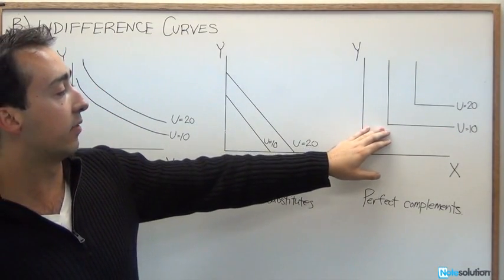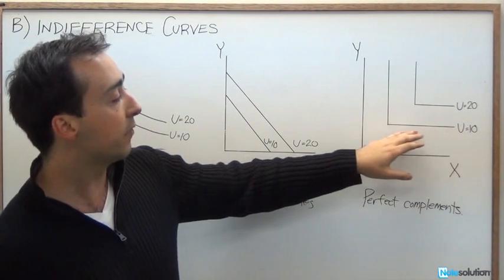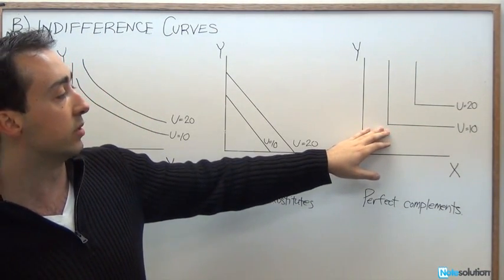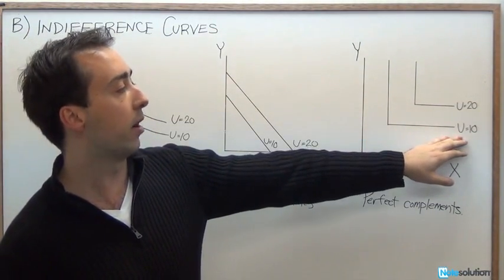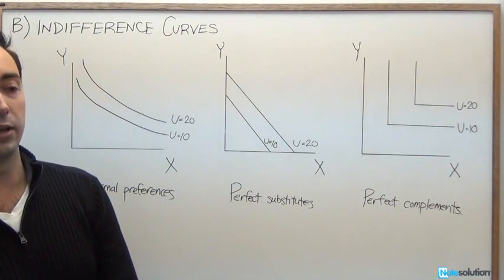What if we had only one left shoe and infinitely many right shoes? We're still only going to get one pair. So, that's to say, a utility value of 10.